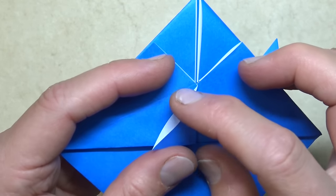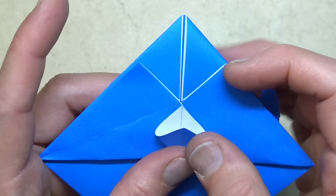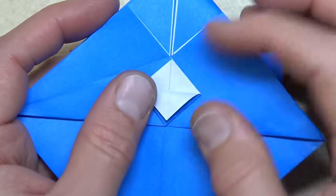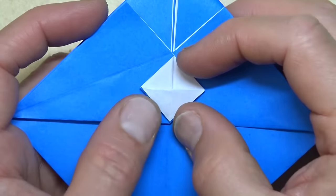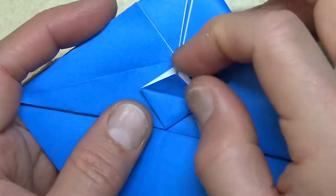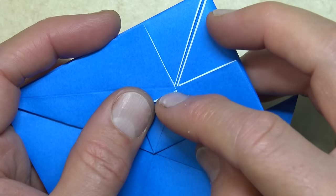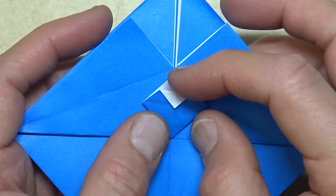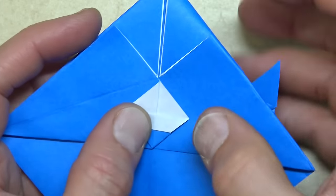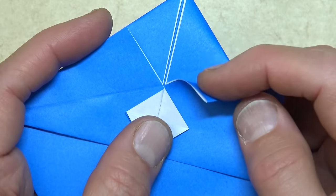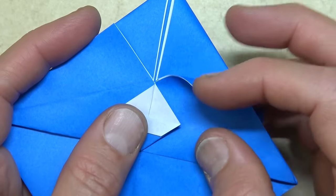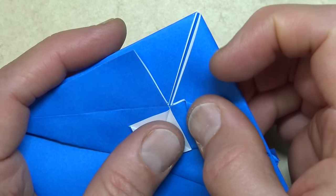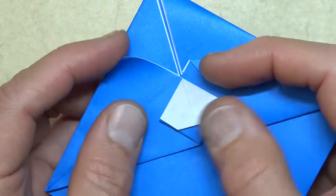And now open the pocket and squash. And fold the flap down. Unfold. And fold to the crease. And fold it down. Now fold this flap to this point. Repeat.